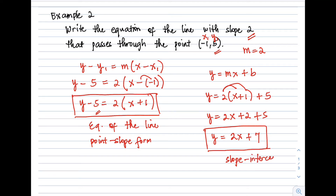Always check the instruction to know which form to use for your final answer. If the problem asks for point-slope form, use y − 5 = 2(x + 1). If it asks for slope-intercept form, the answer is y = 2x + 7.